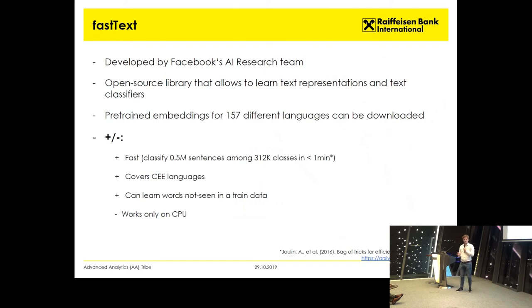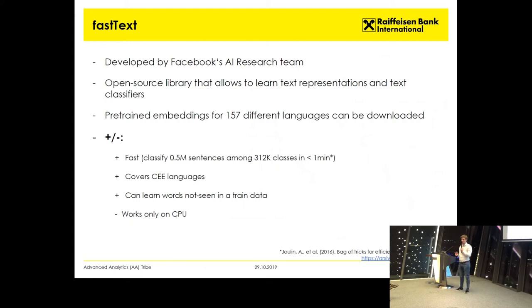Which model did we use for this part? We use FastText. It's a model developed by Facebook's AI research team and it's open source. You can download the embeddings that were pre-trained on Wikipedia pages and common crawls — a large corpus of data available on the internet. It was trained on 157 languages, and you can download these embeddings for all those languages, which covers all the RBI languages. FastText learns fast in classifying and can also learn words that were not seen in the training corpus.